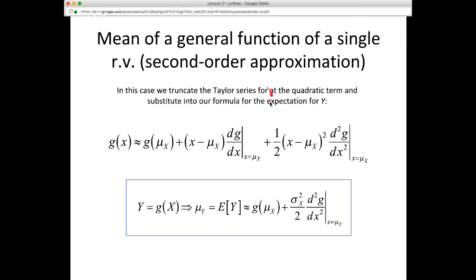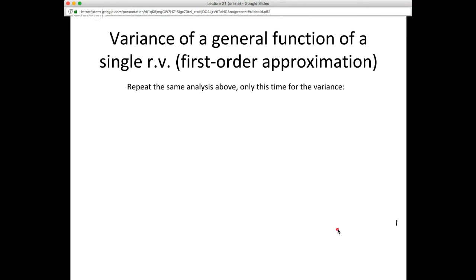We can also do a second-order approximation by including the second-order term from the Taylor series expansion rather than truncating there. When we plug back into the expected value definition, the mean of Y is approximately G(mu_X) plus one-half times the second derivative of G with respect to X squared evaluated at mu_X, times the variance of X.